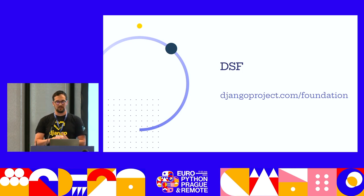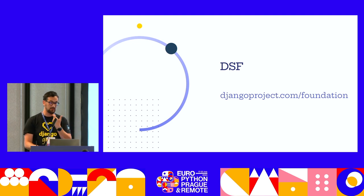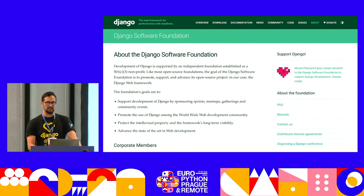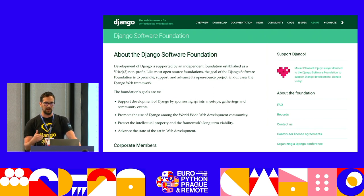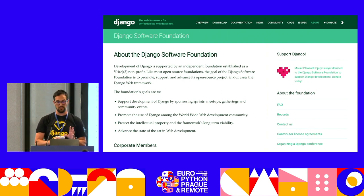One of the last sections I ever read as a user was the one about the Django Software Foundation, which was also one of the most difficult to find. It contains a lot of very interesting information about Django and its foundation. I found this page late in my career as a Django user, but when I did, I learned more about the foundation, its goals, and found the list of people involved — the members and the board. Unfortunately, it's not well organized and a bit difficult to navigate.